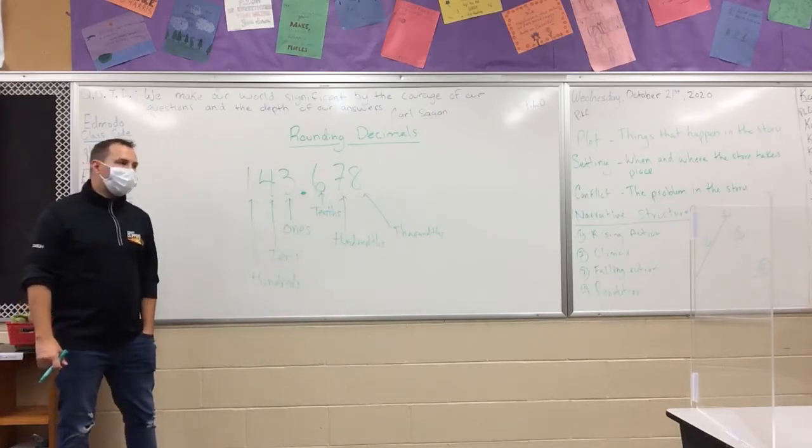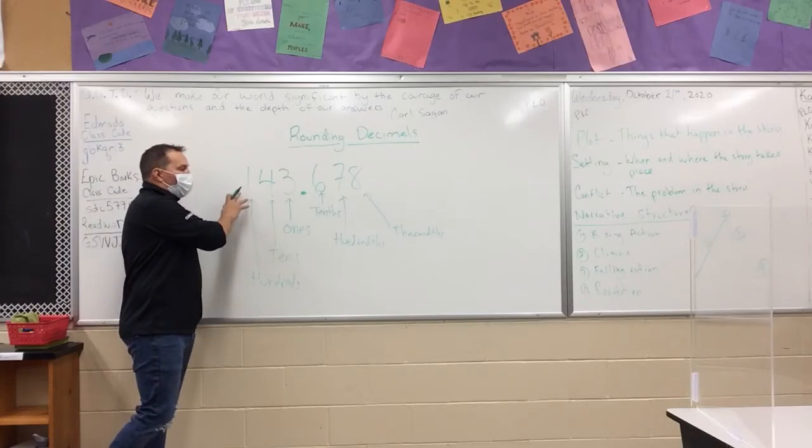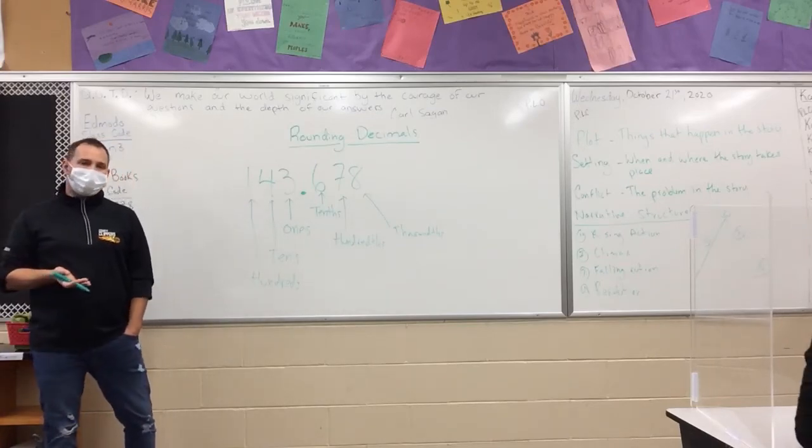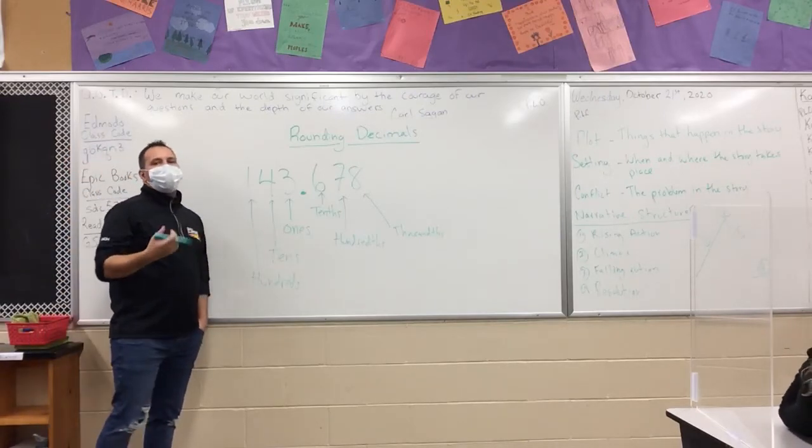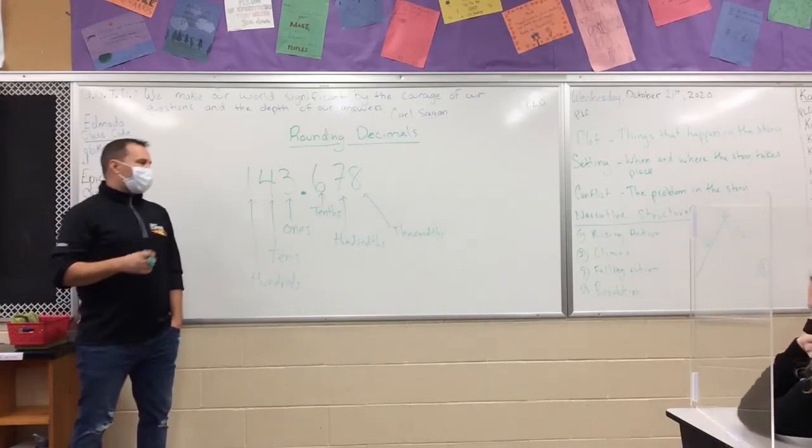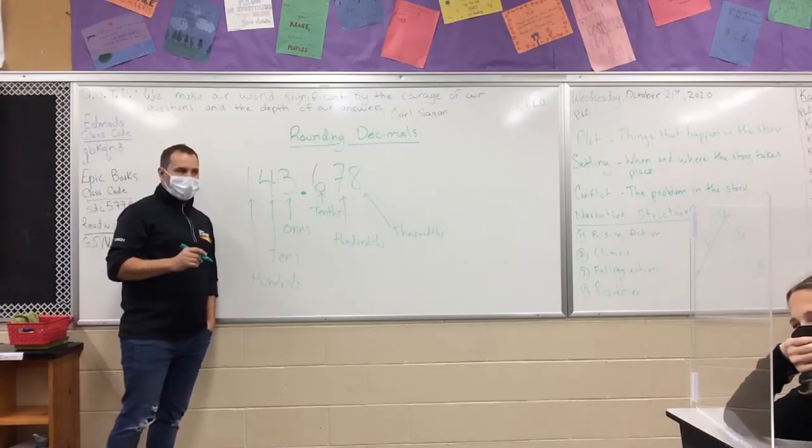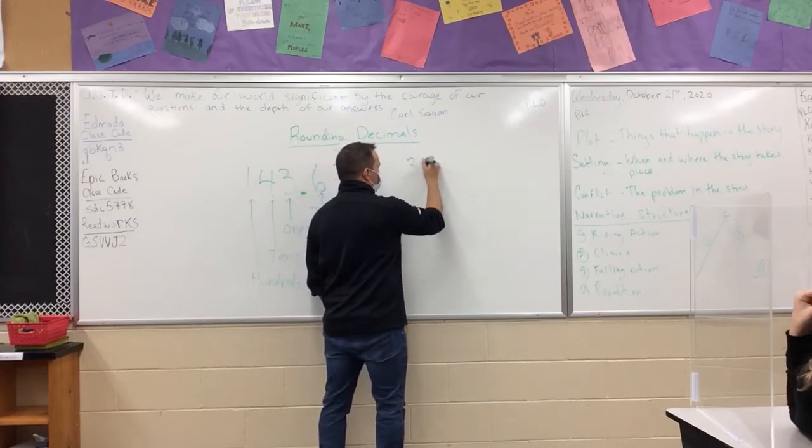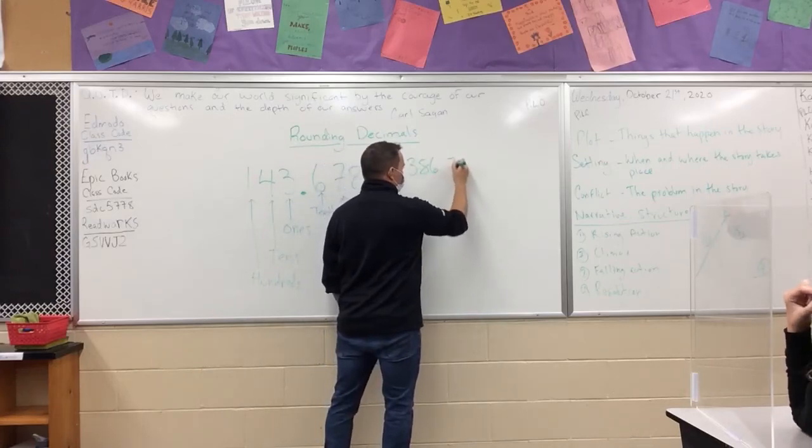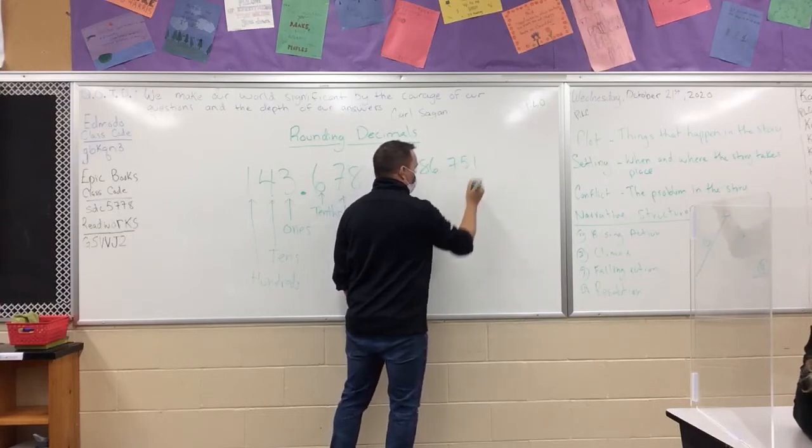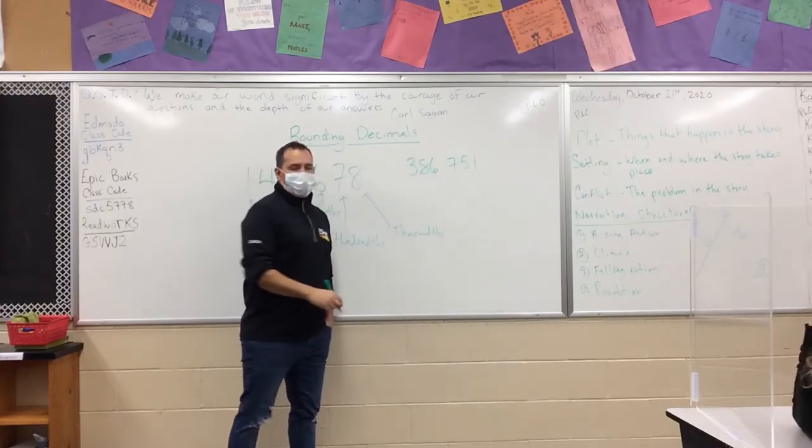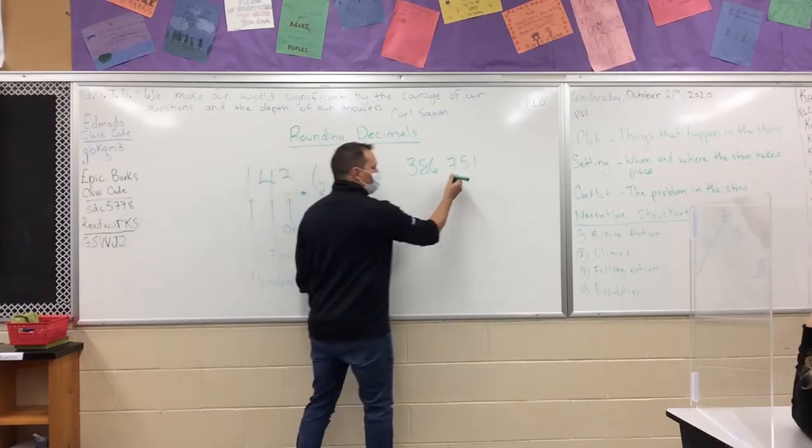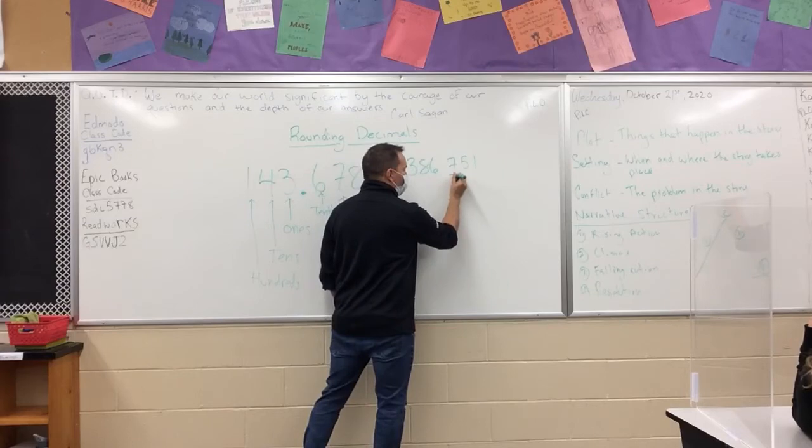Just like when we round whole numbers, rounding decimals is very similar. You'll get language that will ask you questions like round to the nearest tenth. So if you heard, let's put up a number here: 386.751. If we said round to the nearest tenth, you have to go to the tenth and then we put a little line under it. So we're rounding this number.